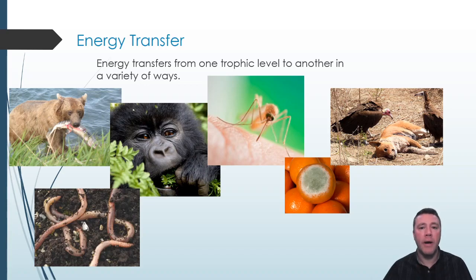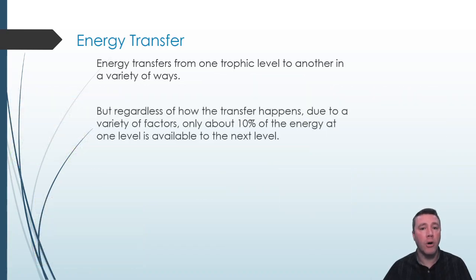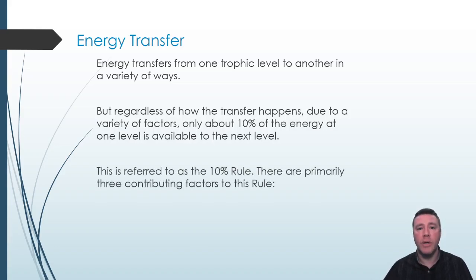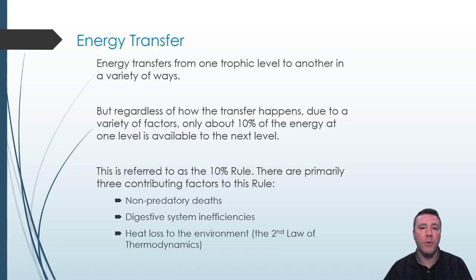One thing that is common about how energy transfers, regardless of how it occurs, is that only about 10% of the energy available at one level is transferable to the next level. This is referred to as the 10% rule, and there are three reasons for this phenomenon. Those reasons—non-predatory deaths, digestive system inefficiencies, and the second law of thermodynamics—are going to be explored individually in greater detail.